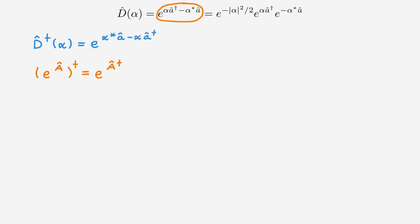Using a similar derivation to the one just used, we can separate this expression into an exponential of the scalar α, multiplying an exponential of the lowering operator, and an exponential of the raising operator. As a question before we move on: try to convince yourself that this expression is consistent with the adjoint of the expression with the three exponentials.